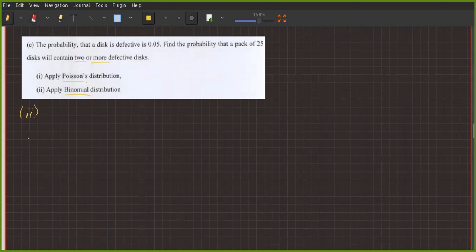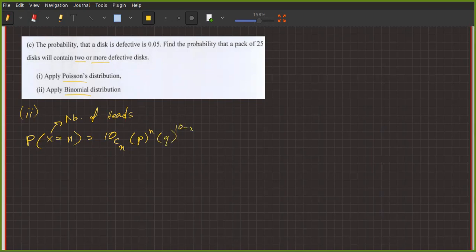So the formula is P(X) equals nCr. X would be the number of heads, or whatever event you're counting. Let's say the number of heads when you toss a coin. X is your random variable. The general formula is nCr times p to the power n times q to the power (10 minus n), for example.